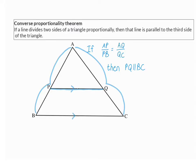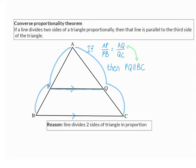This theorem is the converse of the proportionality theorem because the if and the then part simply swapped around. The reason for this theorem: a line divides two sides of a triangle in the same proportion.